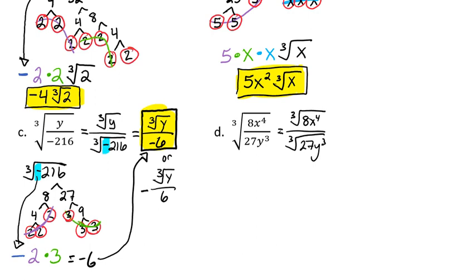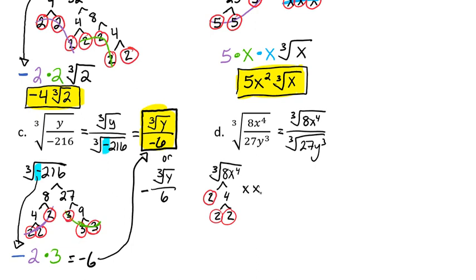We'll take the cubed root of 8x to the 4th and break it down. 8 breaks down to 2 and 4, and 4 breaks down to 2 and 2. Then we have 4 x's. Looking for groups of 3 — we have a group of three 2s, so a 2 comes out. And we have three x's, so an x comes out. But we're left with a cubed root of a single x that didn't come out. So the numerator simplifies to 2x times the cubed root of x.